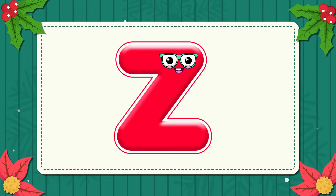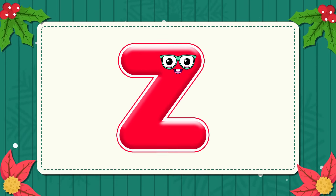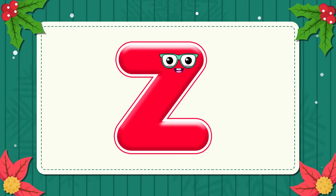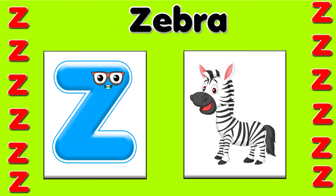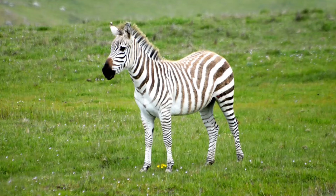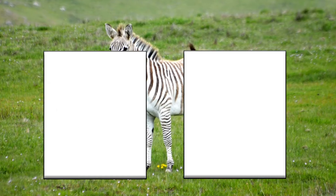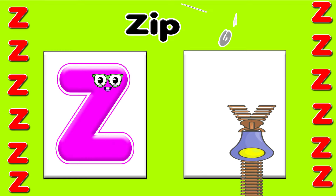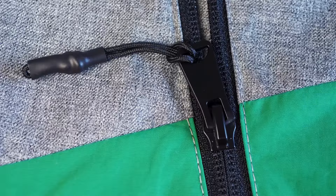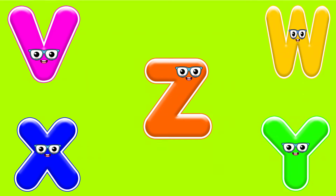Z. This is the letter Z. Z is for zebra — z, z, zebra. Z is for zipper — z, z, z.